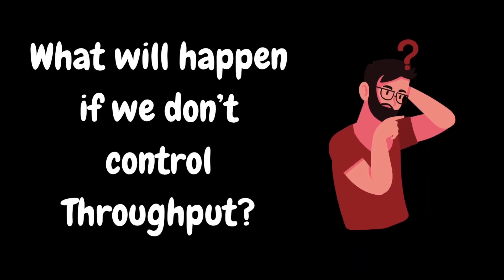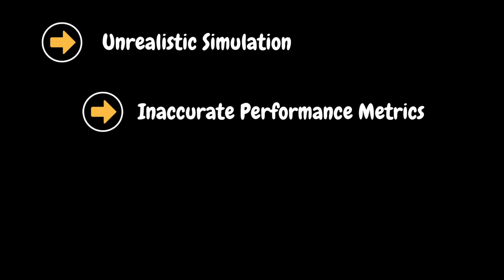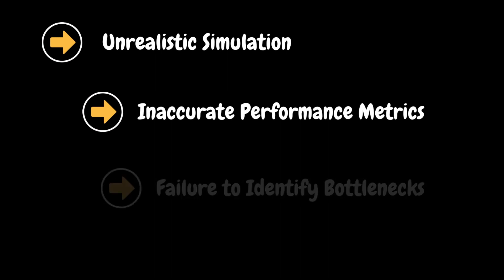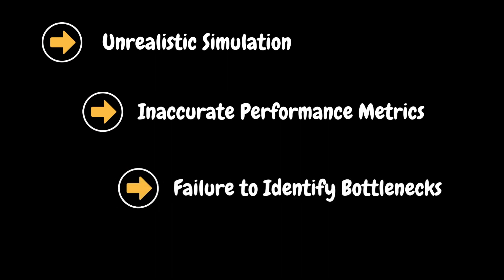You might be thinking: what will happen if we don't control throughput in performance test executions? Without controlling throughput, the test environment may not accurately simulate real-world scenarios. This can lead to invalid results as the system may not experience loads and traffic patterns that reflect actual usage. Throughput is a key performance metric and its uncontrolled variability can lead to inaccurate measurements. Fluctuations in throughput make it challenging to assess true performance characteristics under consistent conditions. Throughput control is also essential for gradually increasing the load to identify performance bottlenecks — without this control, critical bottlenecks may go unnoticed.